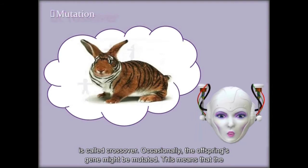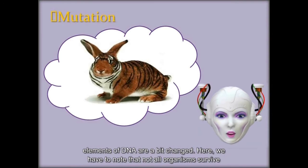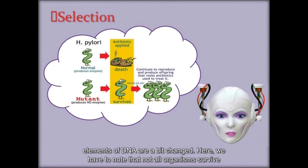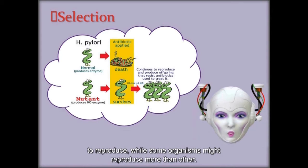Occasionally, the offspring's gene might be mutated. This means that the elements of DNA are a bit changed. Here, we have to note that not all organisms survive to reproduce, while some organisms might reproduce more than others.